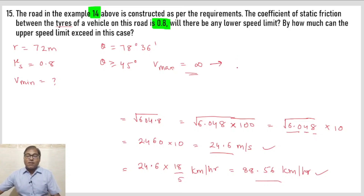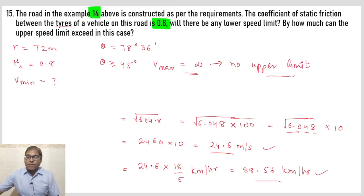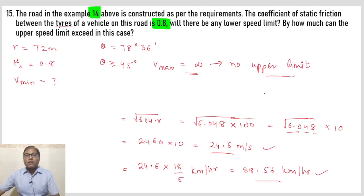Conclusion: Is banked road par koi upper speed limit nahi hai — no upper limit. Aur lower limit 88.56 km/h hai. Iske saath is video ko yahan rok deta hoon; remaining questions next video mein aayenge.